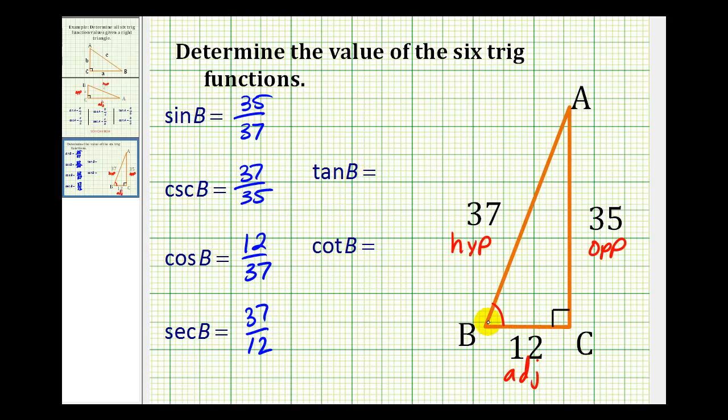And the tangent of angle B would be the ratio of the length of the opposite side to the length of the adjacent side, so we'd have 35/12. And again, the cotangent of angle B would be the reciprocal of the tangent of angle B, so we'd have 12/35.